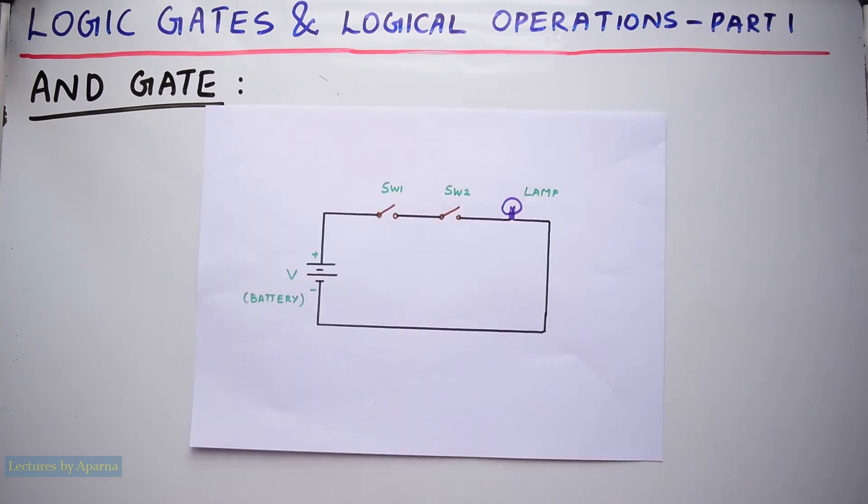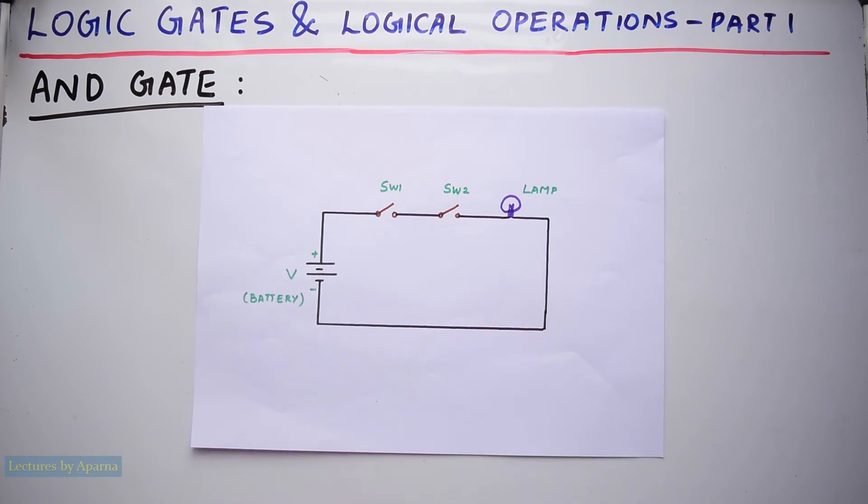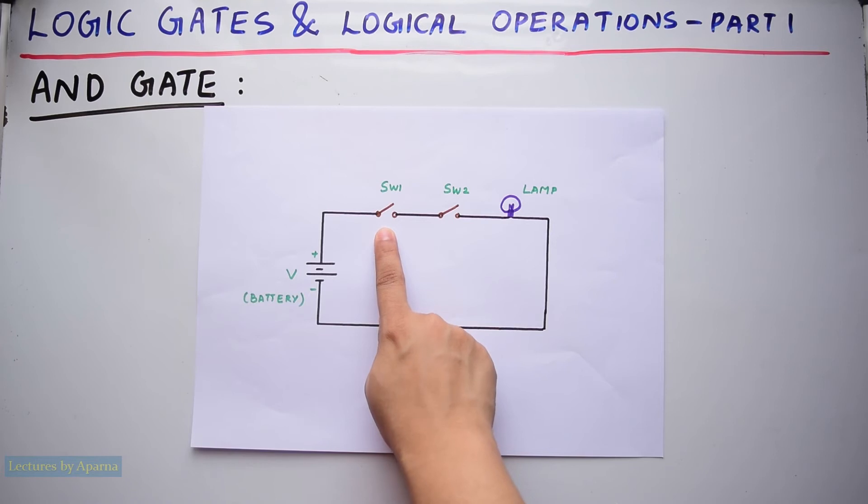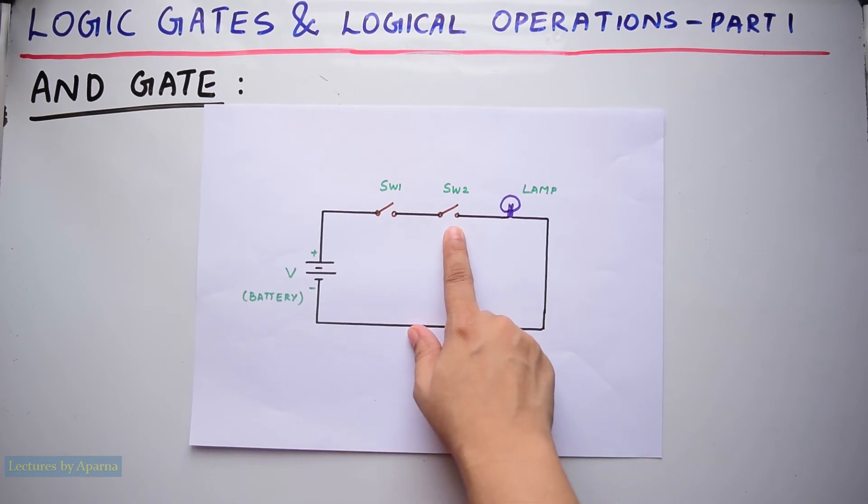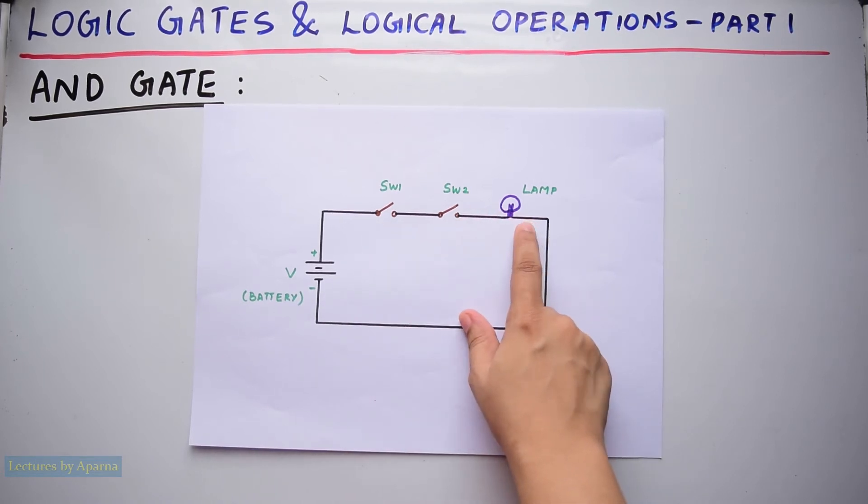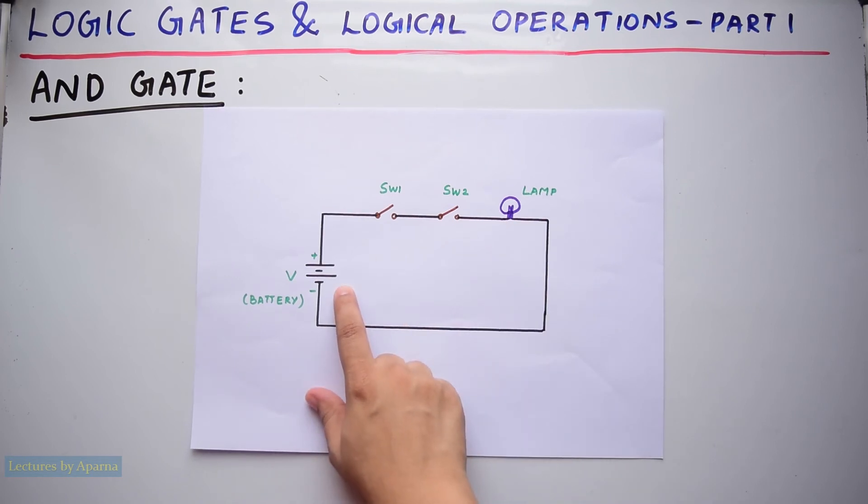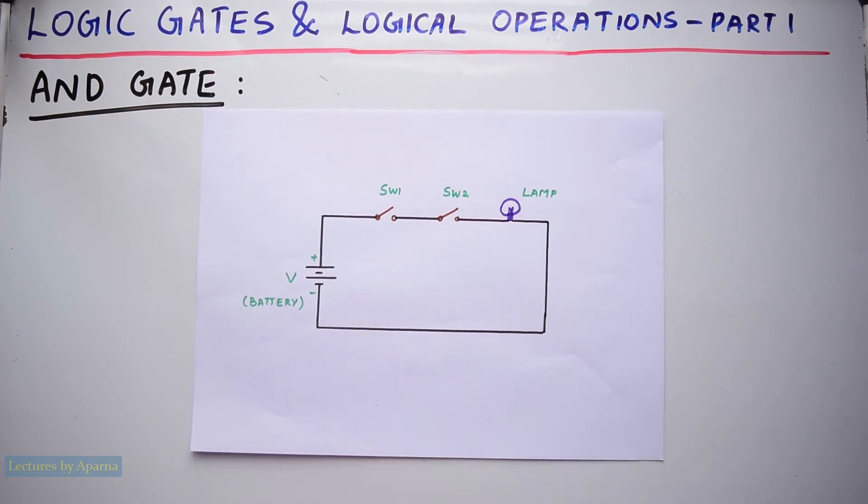The AND logical operation can be explained using a simple circuit using switches. Suppose you have a circuit like this. Here there are two switches: switch 1 and switch 2. Then there is one lamp and a battery. Here two switches are connected in series.